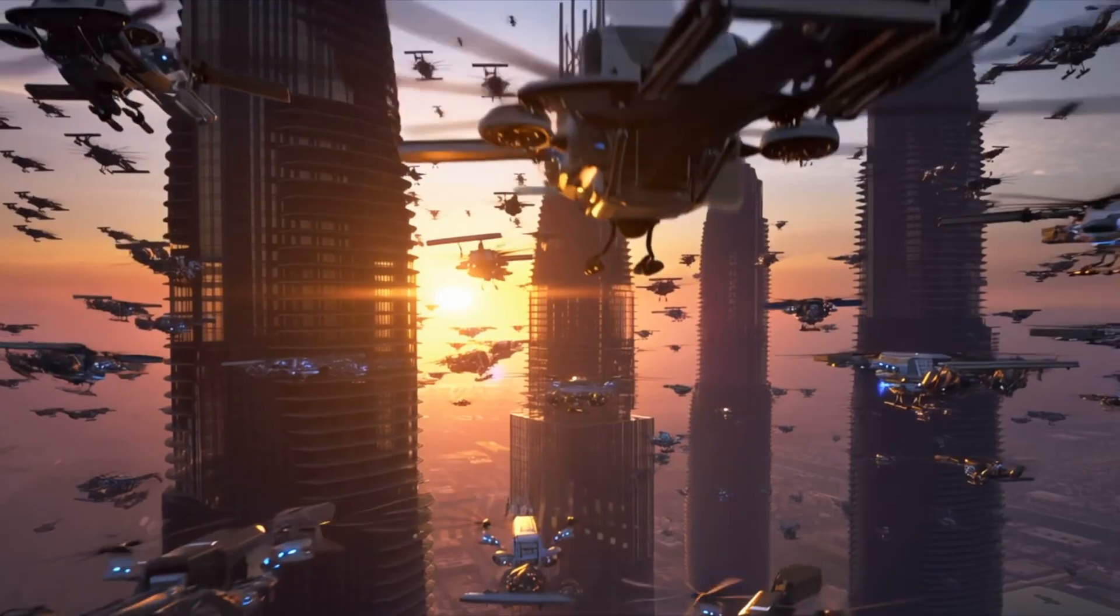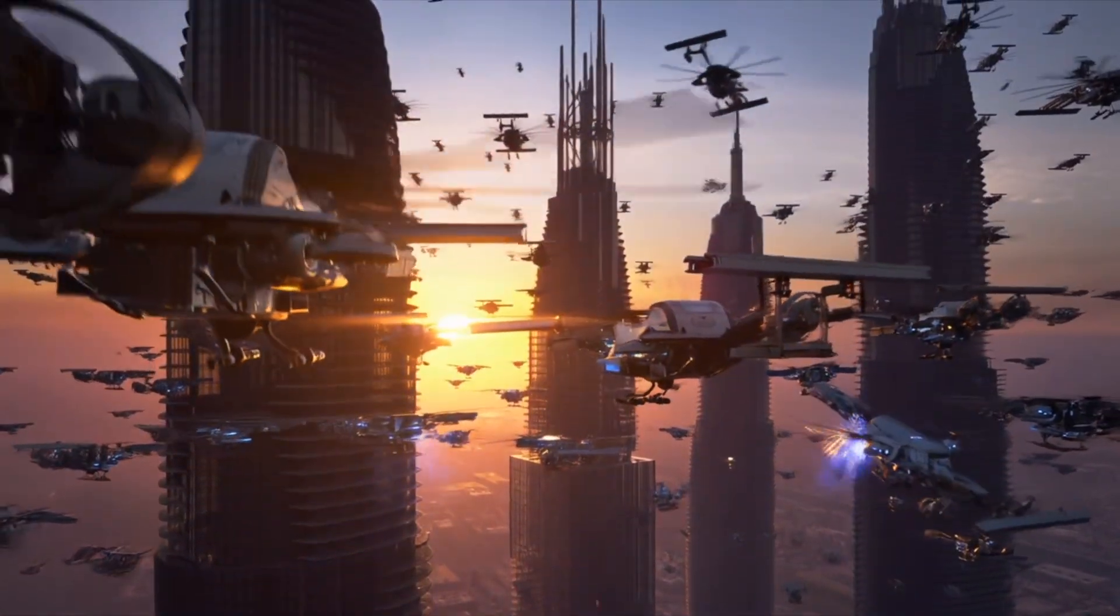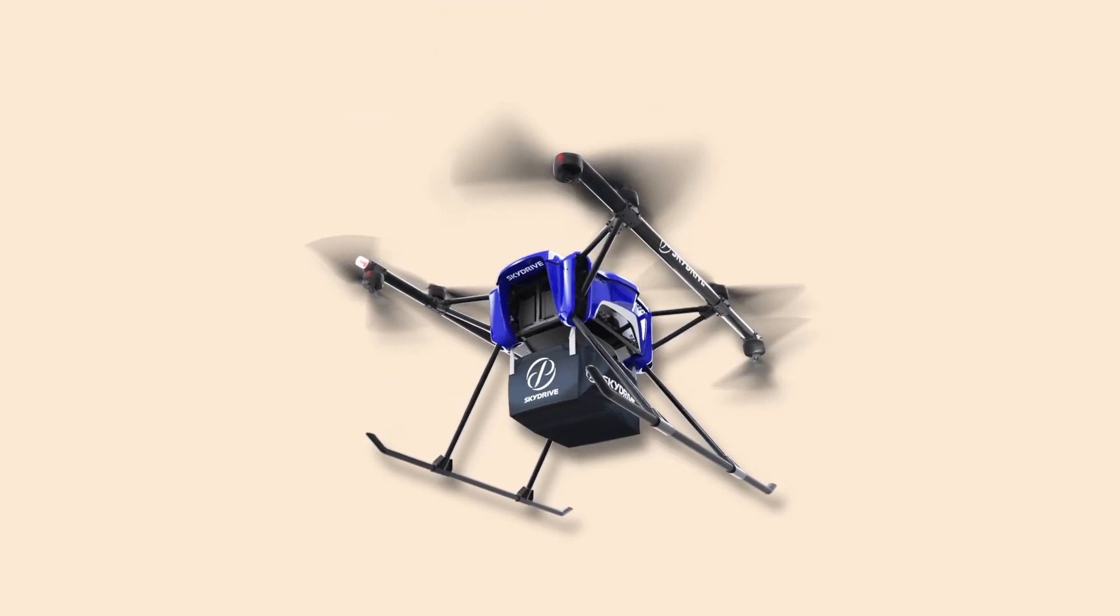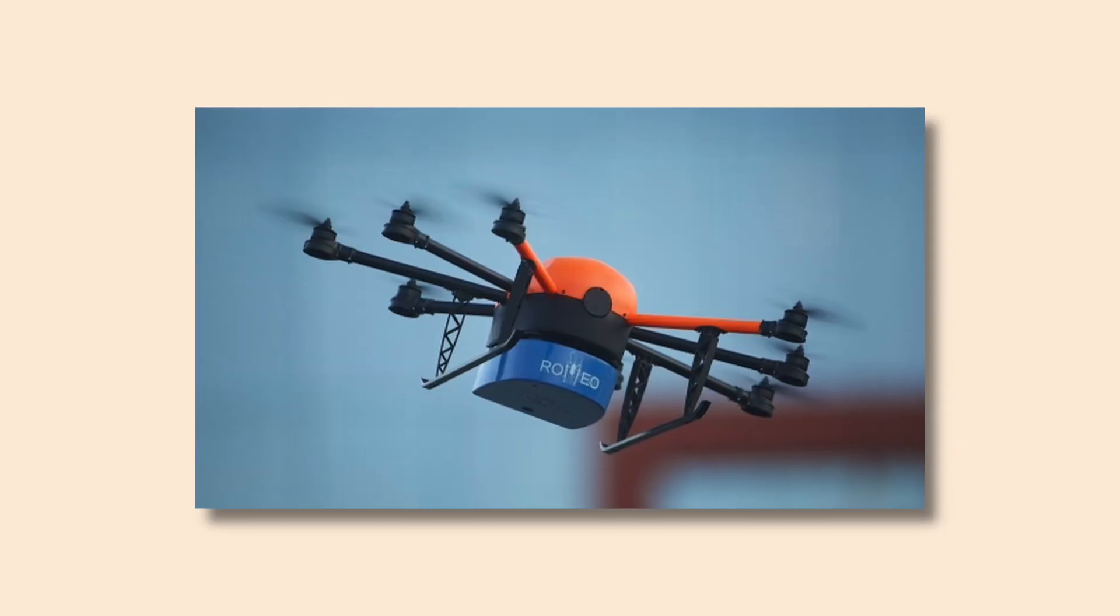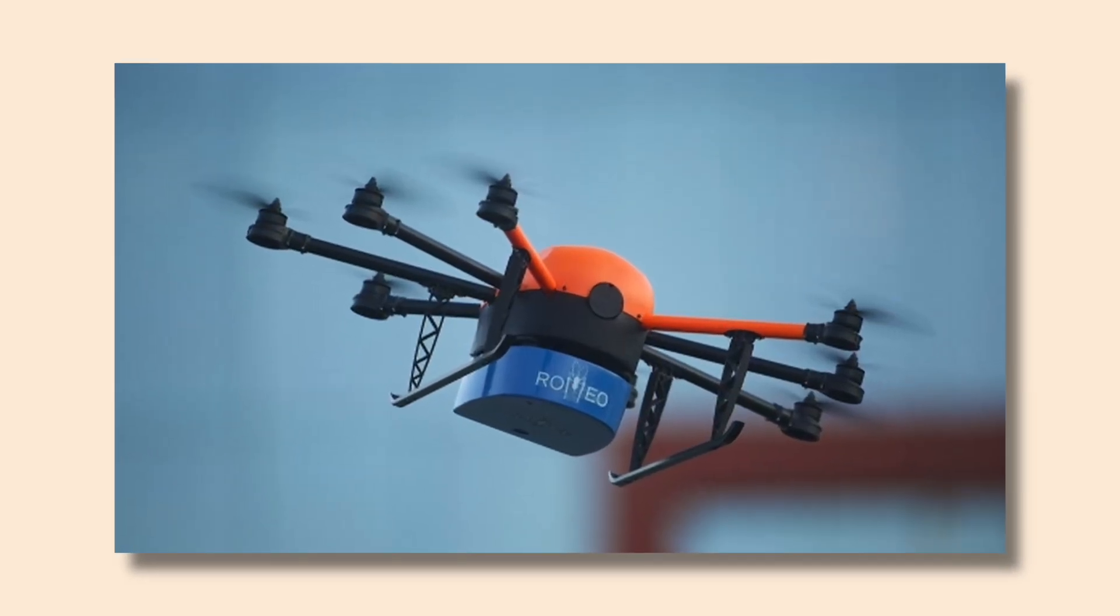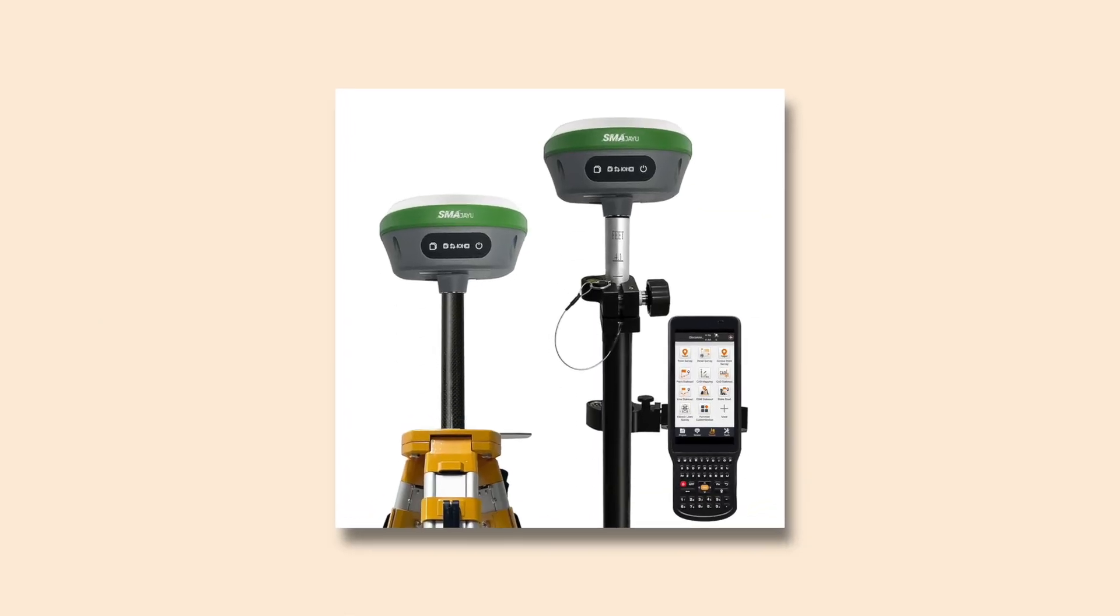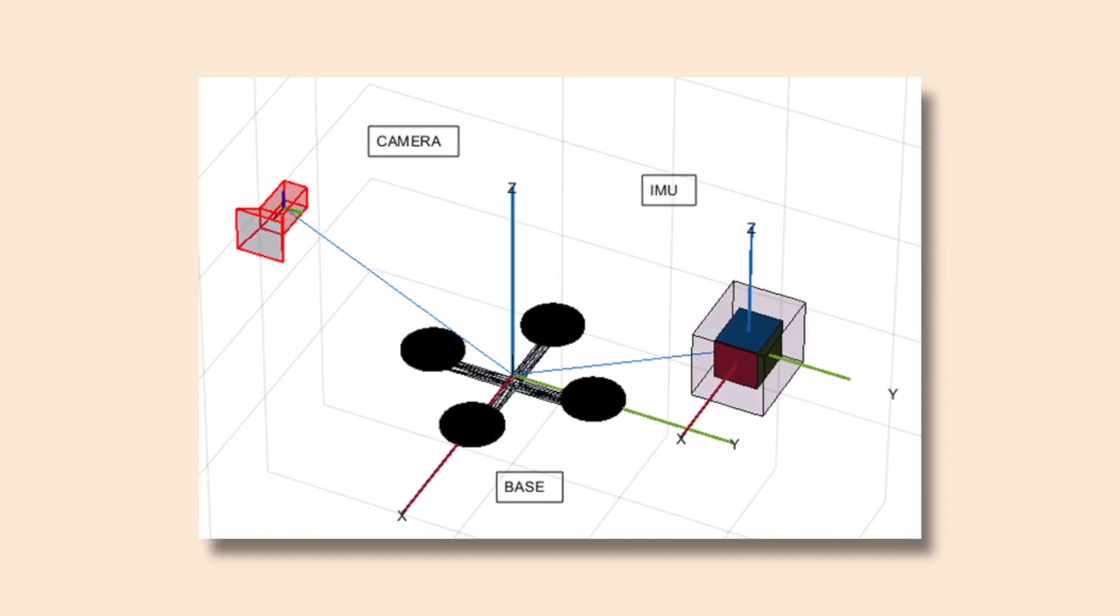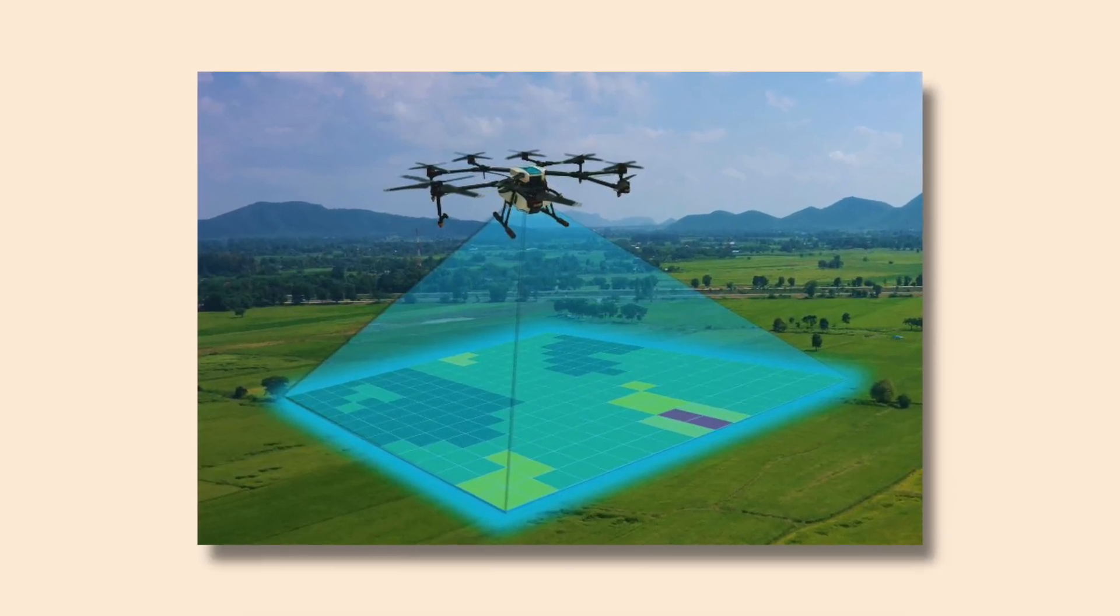But the next leap is swarm construction. In swarm architectures, specialized drones collaborate. Surveyor drones map the site in 3D. Transporter drones bring prefabricated modules. Assembler drones align and bolt components. Finishing drones apply sealants and sensors. This multi-agent choreography is enabled by localization techniques. RTK GPS for centimeter accuracy, visual inertial odometry for GPS-denied environments, and LIDAR for dense point cloud mapping.